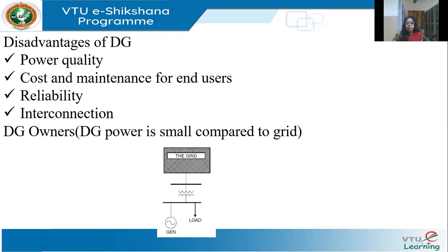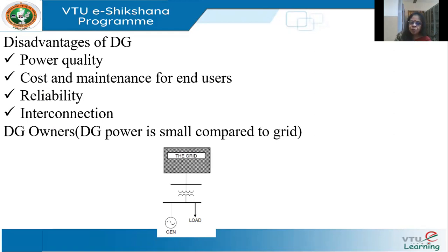The second problem is that since the consumer is installing the DG, the cost and maintenance has to be borne by the end user. The third problem is the reliability of the technology itself — if I use solar, what if it rains or a storm comes? Solar PV may not generate for three or four days. The fourth problem is interconnection: if I want to integrate distributed generation to the grid, I have to synchronize, which can cause problems.